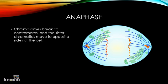The chromosomes break at the centromeres, and the sister chromatids move to the opposite sides of the cell.